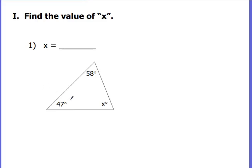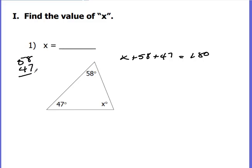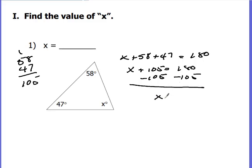We know based on that theorem that 47, 58, and x are all going to equal 180 degrees. So we write the algebraic equation: x + 58 + 47 = 180. Since 58 and 47 can be combined — 8 and 7 make 15, 5 and 4 make 9 plus 1 gives 10, so that's 105 — we get x + 105 = 180. We subtract 105 from both sides and find x = 75 degrees.